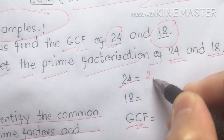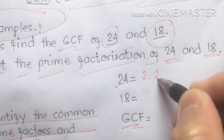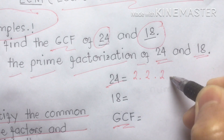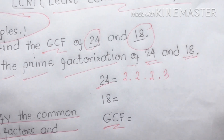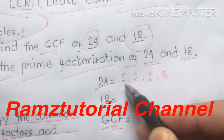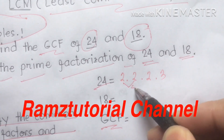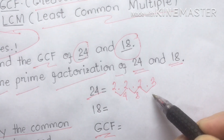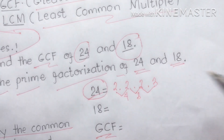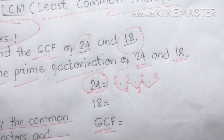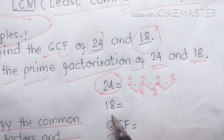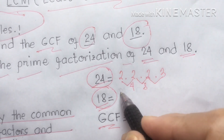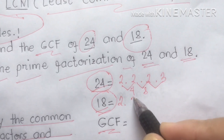For 24, we factor it as 2 × 2 × 2 × 3. Two times two times two is eight, times three gives us 24. Next we have 18 — the possible factors of 18 start with 2 times 3 times 3.